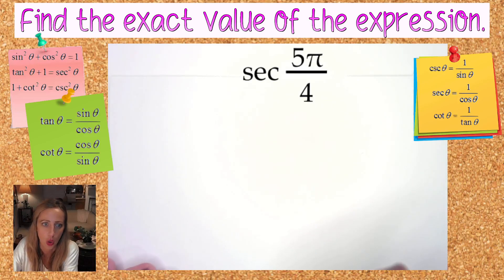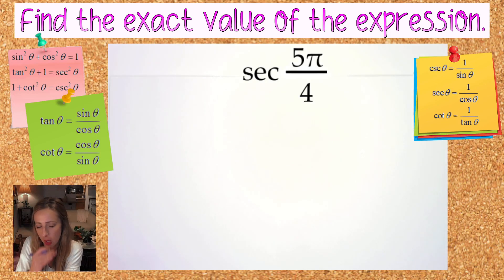So here we have secant of 5π over 4. 5π over 4 is going to be somewhere in the middle of a quadrant. All of the increments of π over 4 are the 45 degree reference angle or the π over 4 radian reference angle.